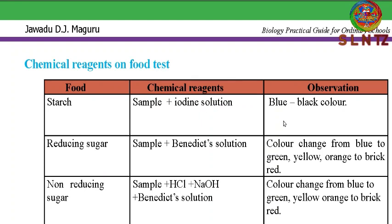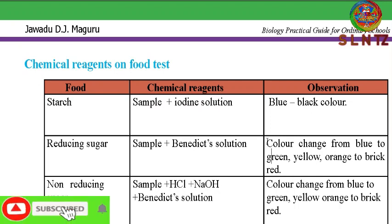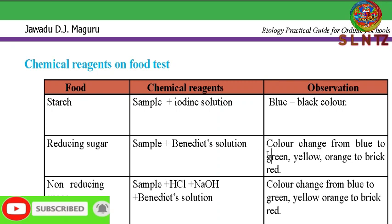For starch: the observation is a blue-black color. If blue-black color is observed, starch is present. For reducing sugar: the reagent is Benedict's solution. The observation showing the presence of reducing sugar is a color change from blue to green, yellow, orange, to brick red.